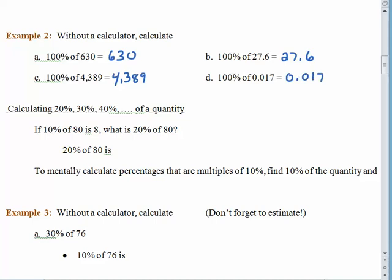Those are our two basics: 10% of something and 100% of something. From there, we're just going to build. So if 10% of 80 is 8, what do you suppose 20% of 80 is? It probably won't shock you to find out that 20% of 80 is 16. All we did was take 8 and multiply by 2, because 10% times 2 gives us 20%. So we're going to start by finding 10% of the quantity, and then multiply by some whole number — it depends upon the percentage we're trying to get.